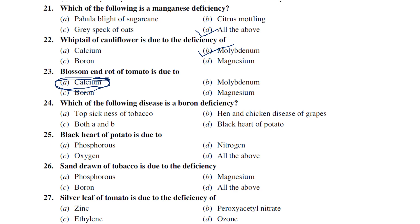For boron deficiency: top sickness of tobacco and hen and chicken disease of grapes are both boron deficiency diseases — answer is A and B. Black heart of potato, however, is due to oxygen deficiency (shortage of oxygen), not boron deficiency. This is also an important distinction.